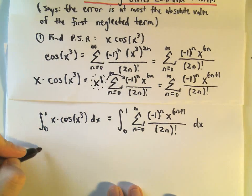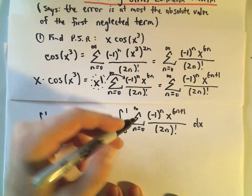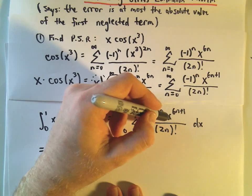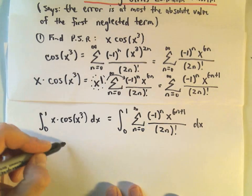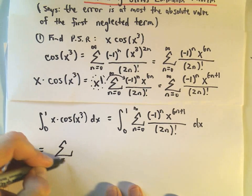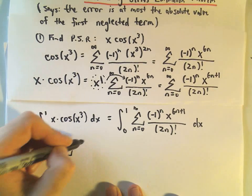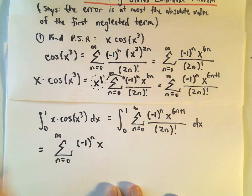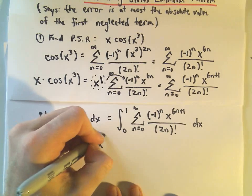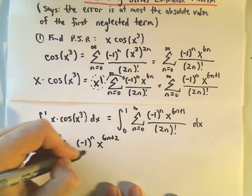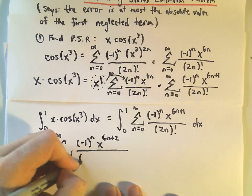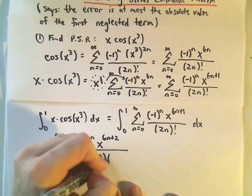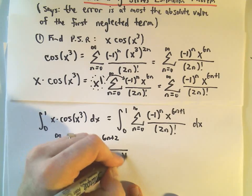To integrate a power series is easy — you just look at your variable x and do normal integration: add 1 to the exponent. So when we integrate, we'll have from n equals 0 to infinity of negative 1 to the n — that just comes along for the ride. Adding 1 to the exponent, instead of 6n plus 1 we're going to have 6n plus 2. When we integrate, whatever the new exponent is, that's what we divide by: 6n plus 2. And then all of that times 2n factorial.